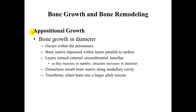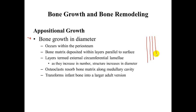In addition to interstitial growth, you also have appositional growth, which is bone growth in diameter. It occurs within the periosteum — the lining on the outside of the bone. Bone matrix is deposited in layers parallel to its surface, increasing the diameter of the bone. These layers are termed circumferential lamellae, and as more lamellae are added, the structure increases in diameter.